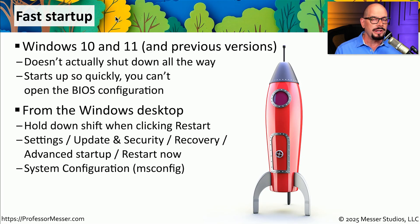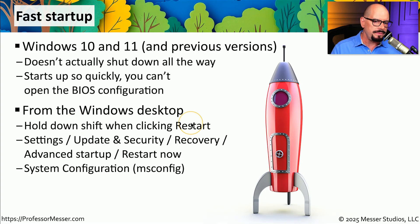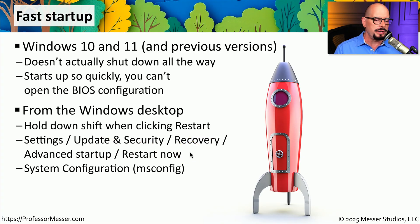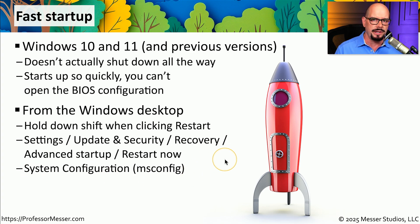If you'd like to tell Windows to shut down completely so that you can start the BIOS configuration, you can hold down the Shift key when clicking Restart, or you can choose Settings, Update and Security, Recovery, Advanced Startup, and Restart Now. You can also make temporary changes to this inside of the MSConfig utility — that is the System Configuration utility in Windows.